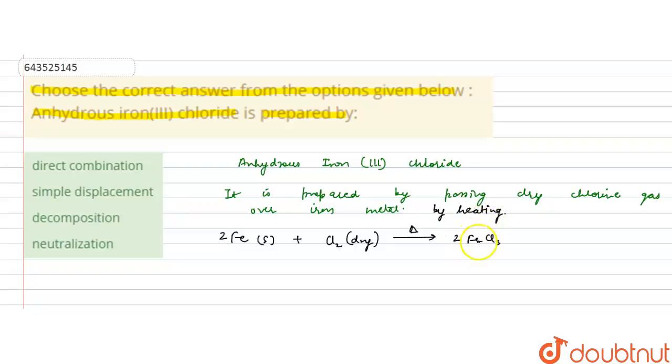So iron chloride is being prepared by the direct combination of the elements - iron and chlorine in the gaseous state. So this is the preparation using direct combination.